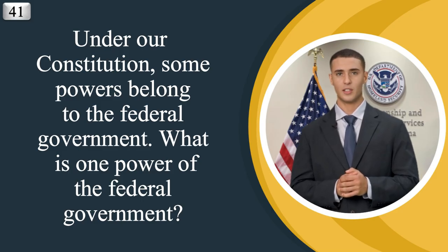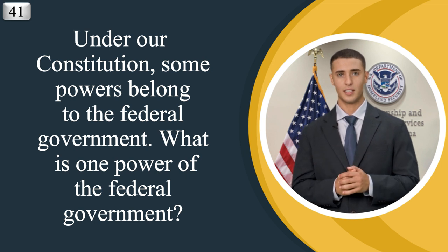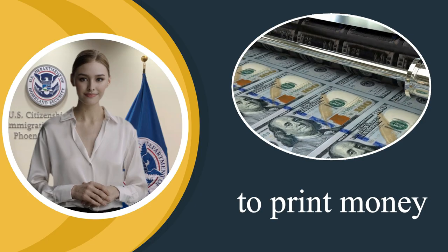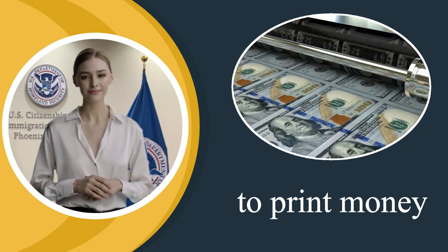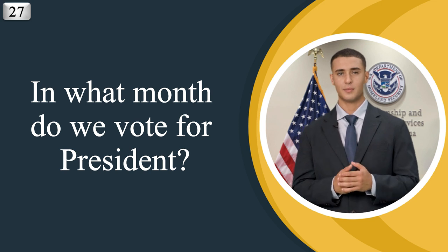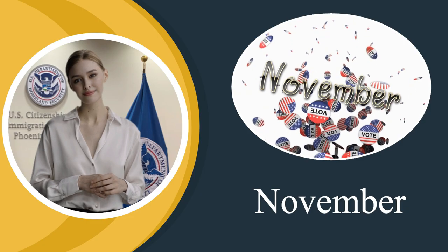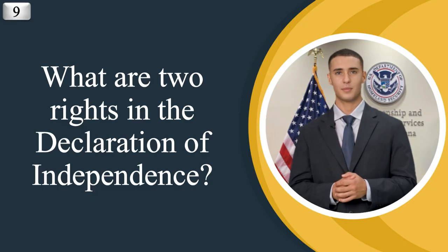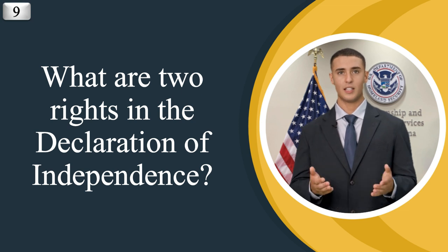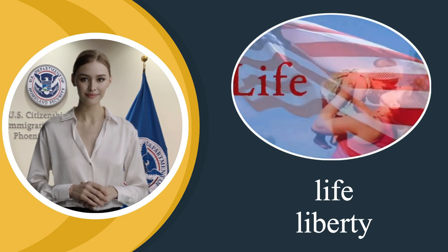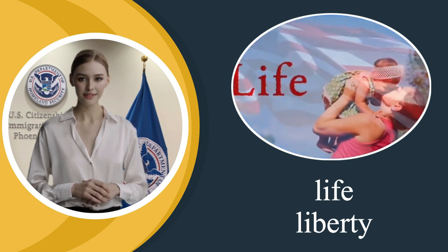Under our Constitution, some powers belong to the federal government — what is one power of the federal government? To print money. In what month do we vote for a president? November. What are two rights in the Declaration of Independence? Life, liberty.